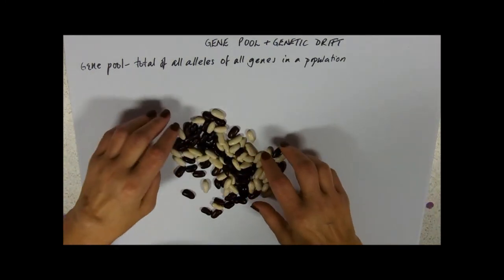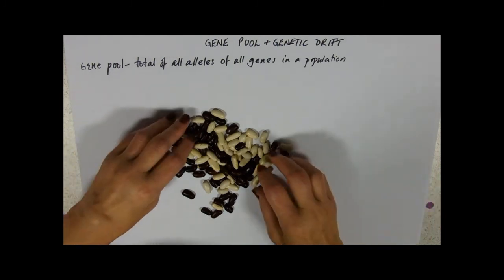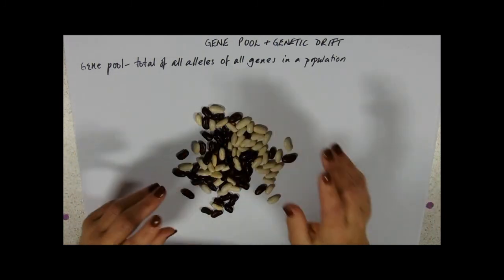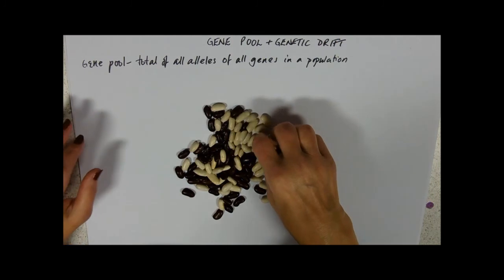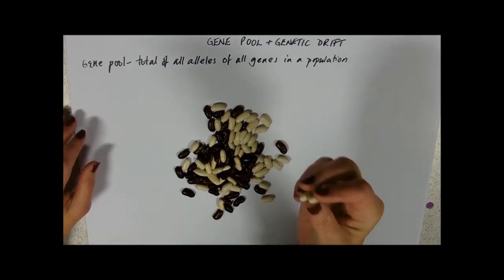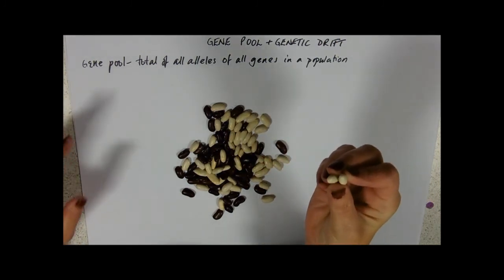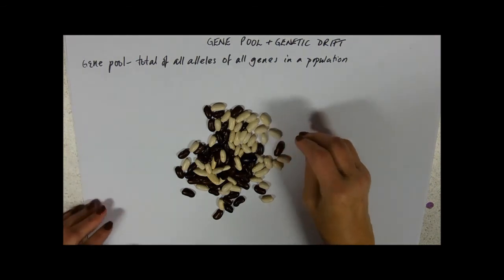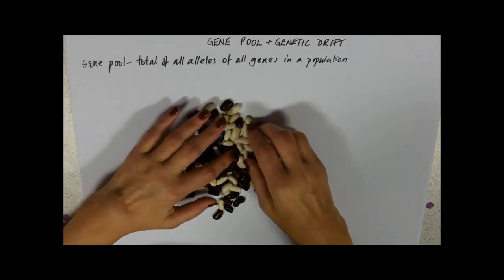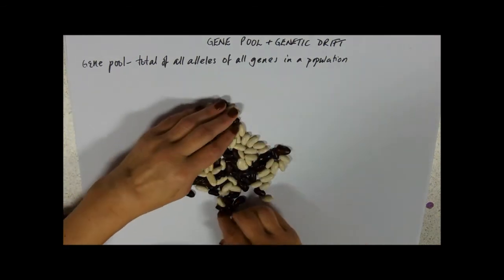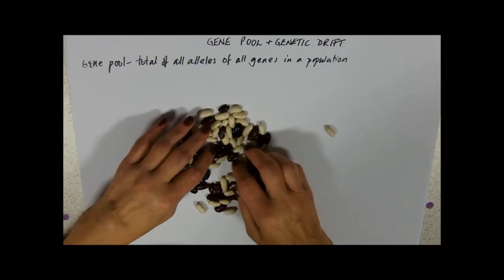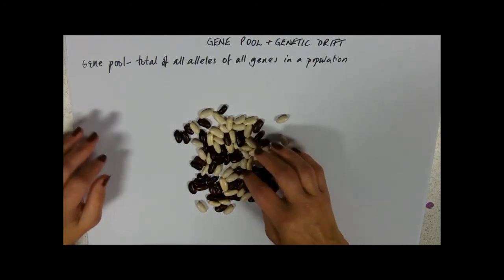So that was the point of doing the breeding bunnies experiment, where if you've got one with two white alleles it's hairless and it's going to die. That was to bring the natural selection story and gene pool stuff together.